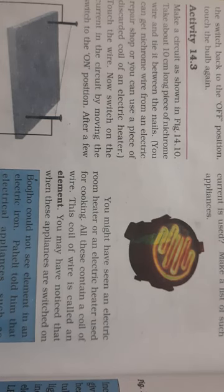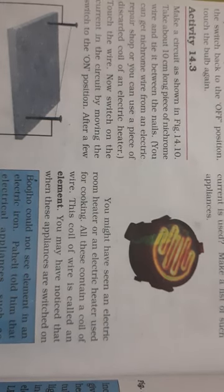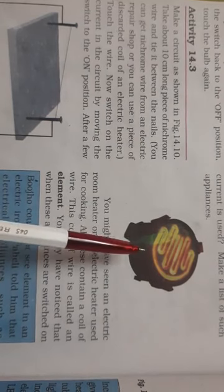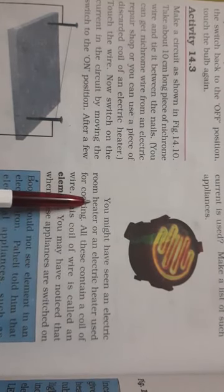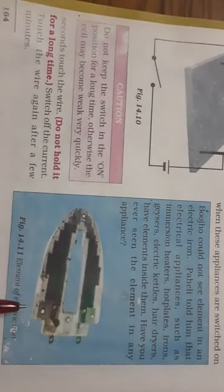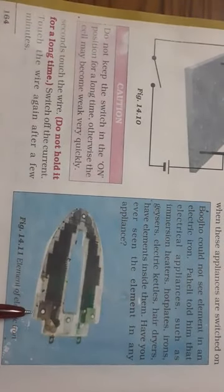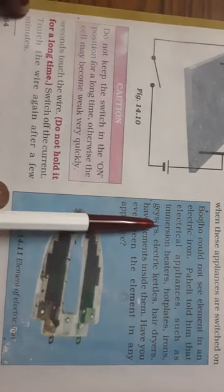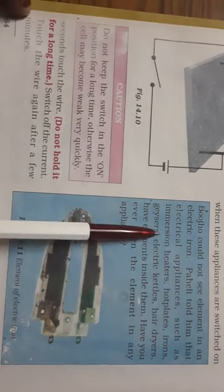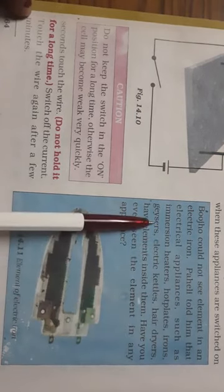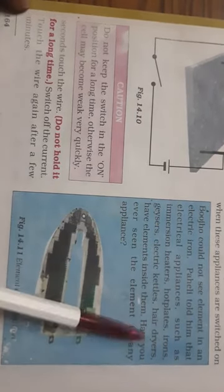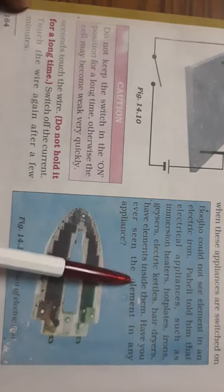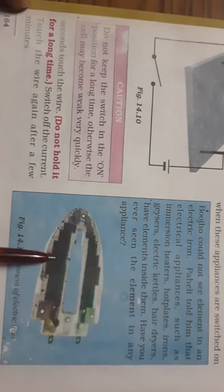And you must have often noticed that whenever you switch on all these appliances, whether it is the heater, whether it is the room heater, electric heater, or even the press, the electric iron, which we use for pressing the clothes. See here many examples are given: immersion heaters, hot plates, iron, geysers, electric cutters, hair dryers. Because they all have element like this inside them.